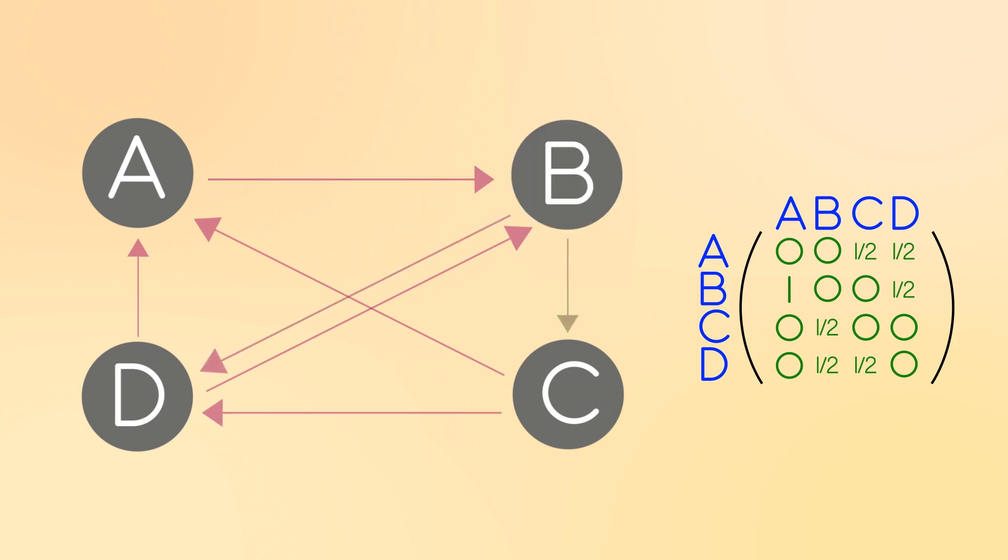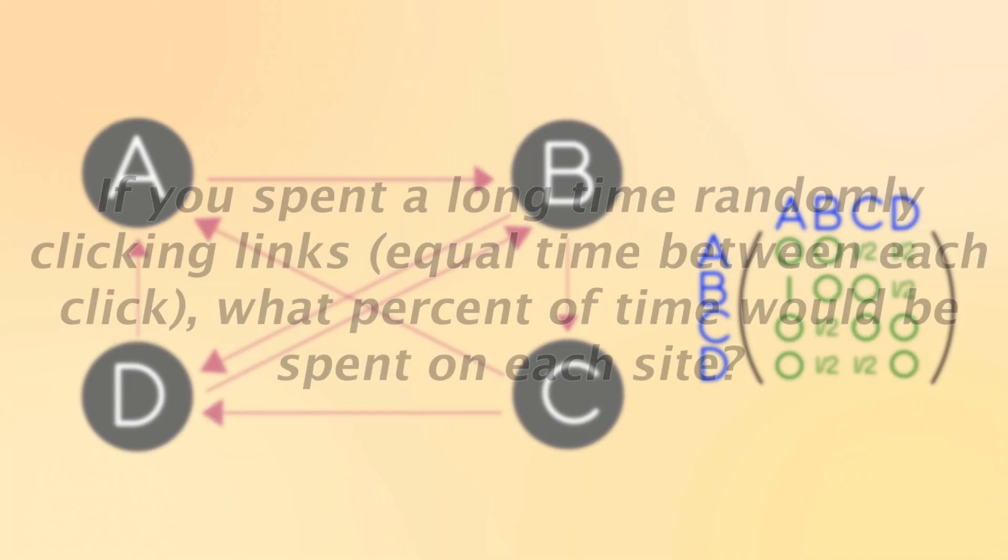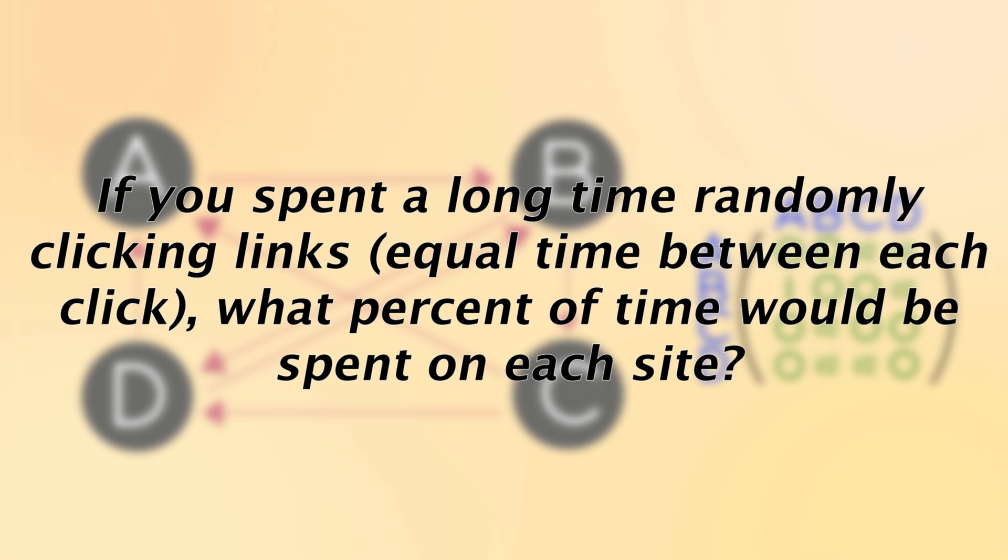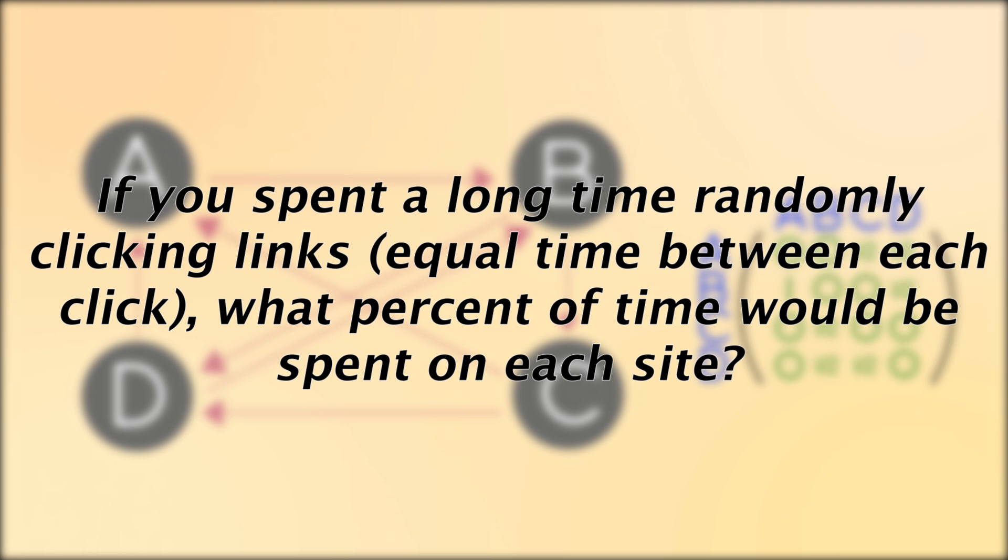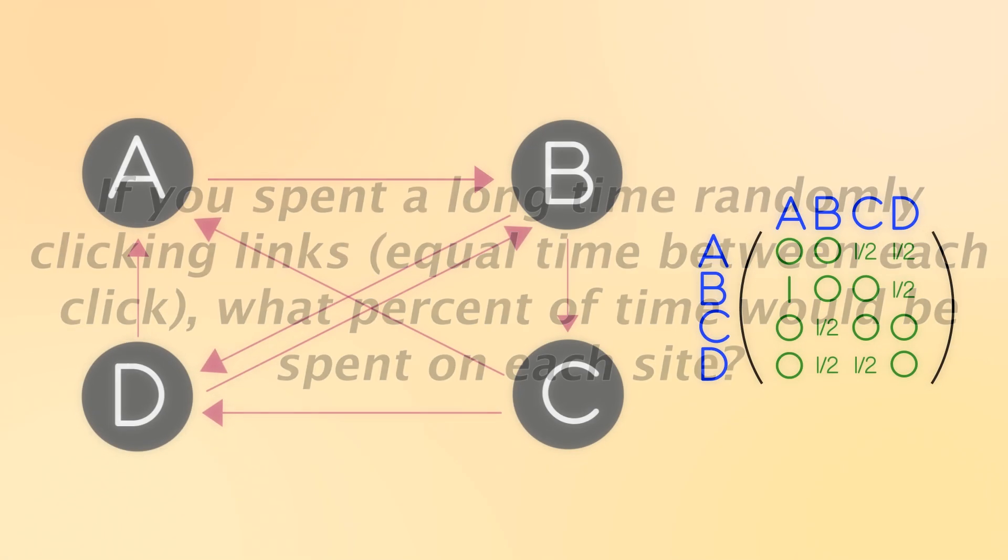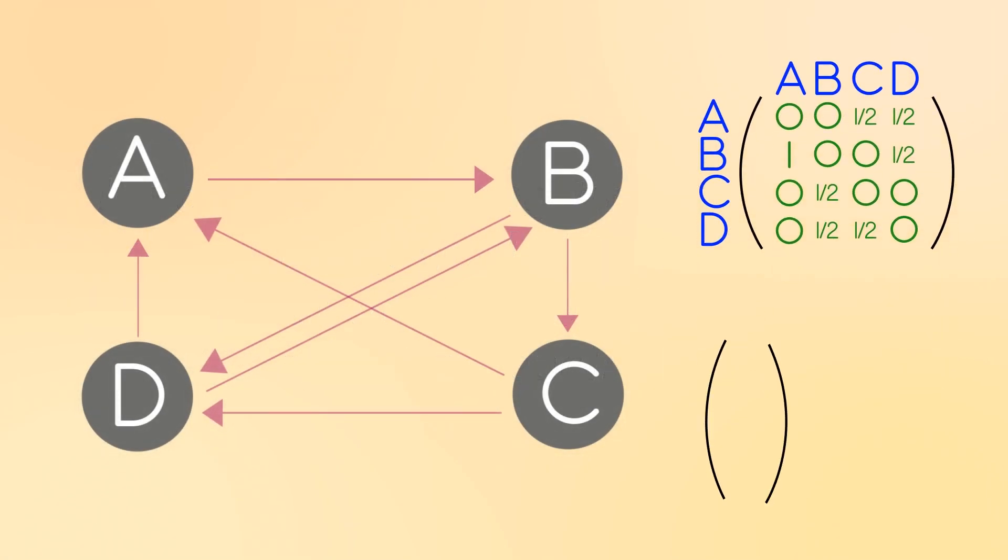So finally, here's how we'll determine ranks. If we spent a long time randomly clicking links, assuming equal time intervals between each click, what percent of that time would be spent on each site? Those percentages, which we'll add to 100 or a decimal value of 1, will be the rank of each site, and we'll put those values in a ranking matrix called R.